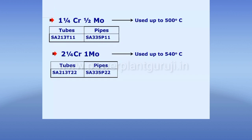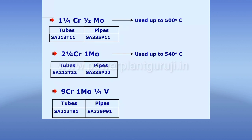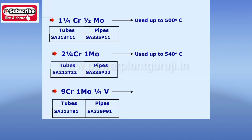This is a modern metallurgy — for the last 15–20 years it has been in use — and that is T91 metallurgy, which is 9% chrome, 1% moly, and 0.25% vanadium added to increase its creep resistance. It is a highly creep-resistant steel. SA213T91 for tubes and SA335P91 for the header. Your main steam header will be of P91 metallurgy for 500 MW, 660 MW, and 800 MW units. In a 660 MW unit, the final temperature is in the range of around 570–580 degrees centigrade.